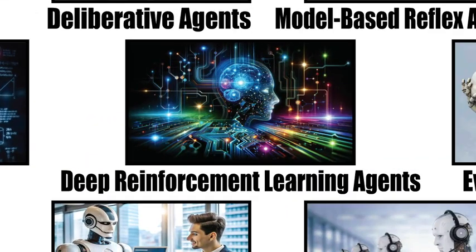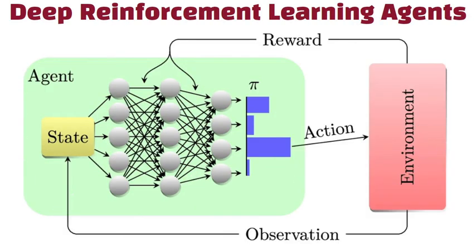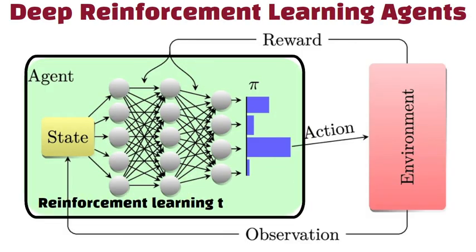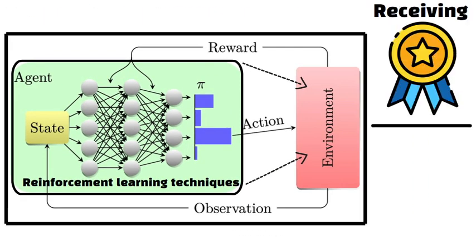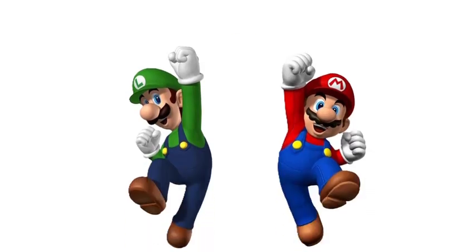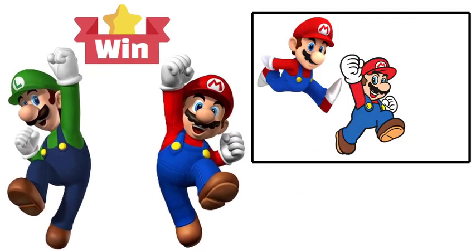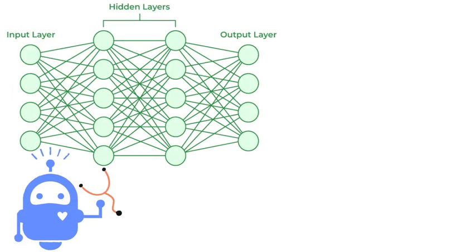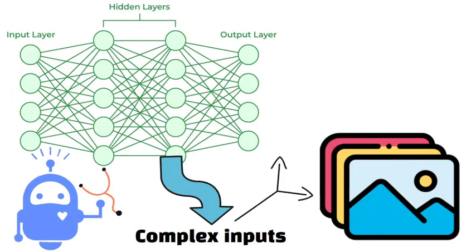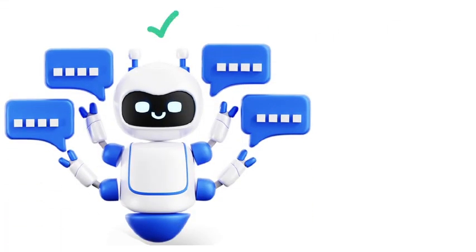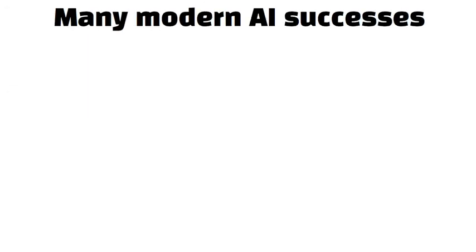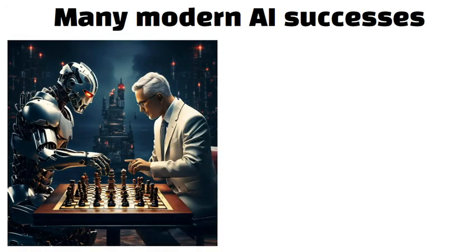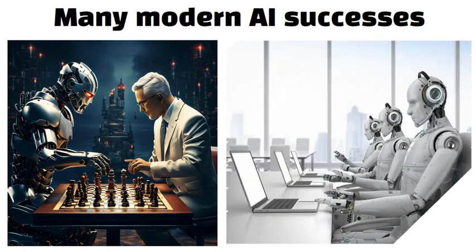Deep reinforcement learning agents combine deep learning with reinforcement learning techniques. They learn by interacting with their environment and receiving rewards or penalties for their actions. Imagine a video game character that learns to win by trying different moves and remembering which ones led to success. These agents use neural networks to process complex inputs such as images or sound and then decide on the best actions based on long-term rewards. This approach is behind many modern AI successes, such as beating human players at strategic games or managing complex tasks in robotics.